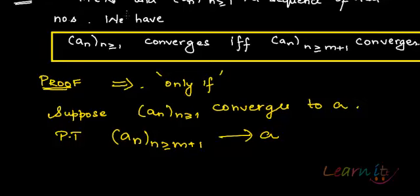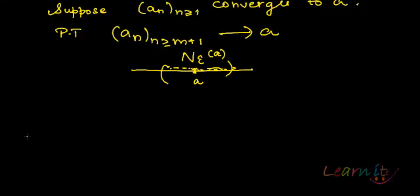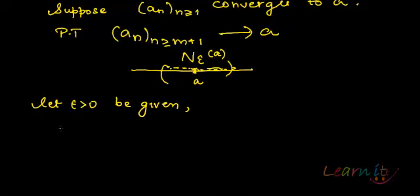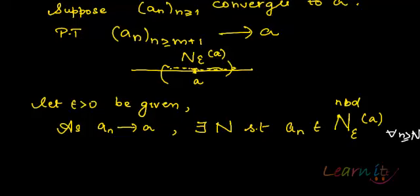Now, a_n converges to a. So there is a neighborhood of a where you actually have all the sequence elements a_n. Let epsilon greater than 0 be given. As a_n tends to a, there exists a capital N such that a_n belongs to the epsilon neighborhood of a.